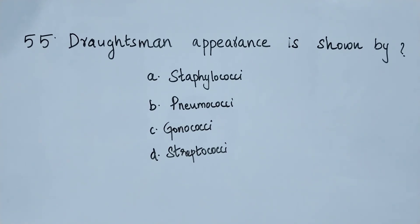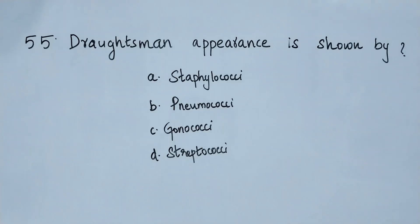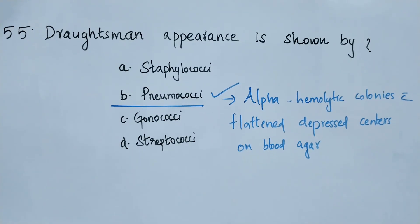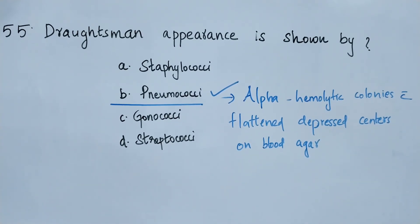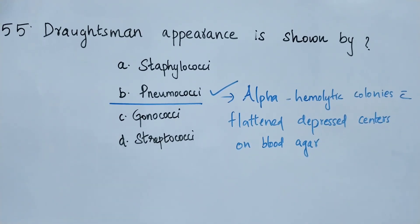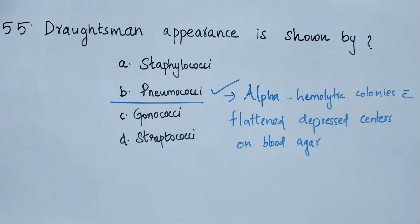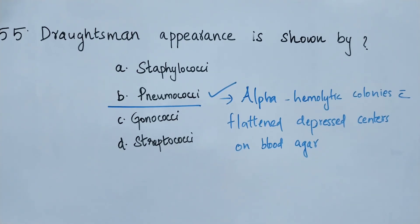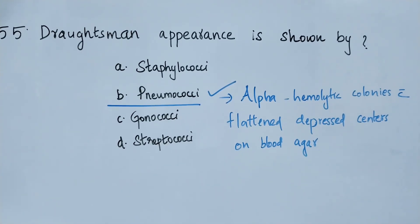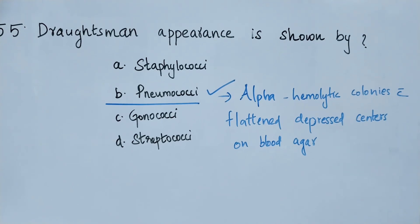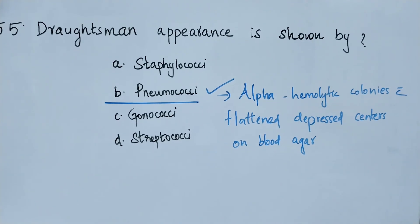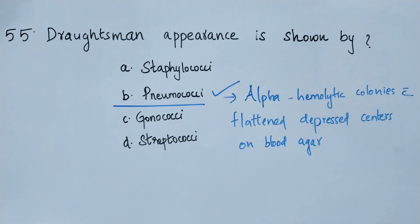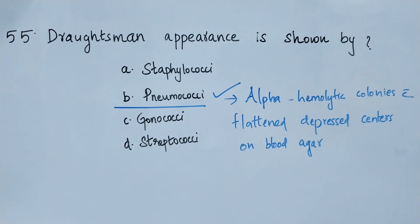Question number 55. Draughtsman appearance is shown by pneumococci. Here we can see alpha-hemolytic colonies with flattened depressed centers on blood agar. This is a special feature exhibited by pneumococci; it is called draughtsman appearance.